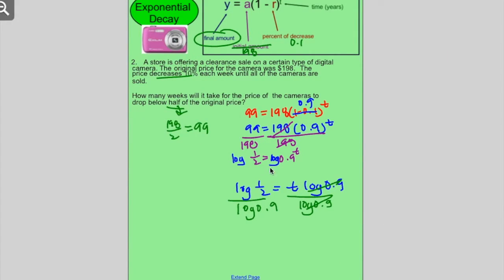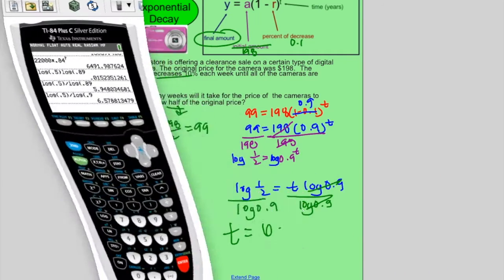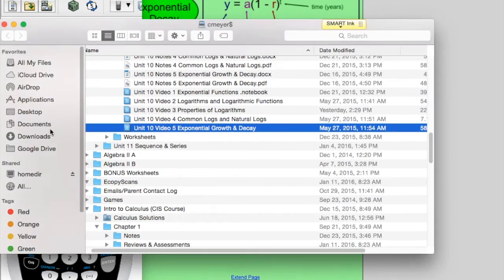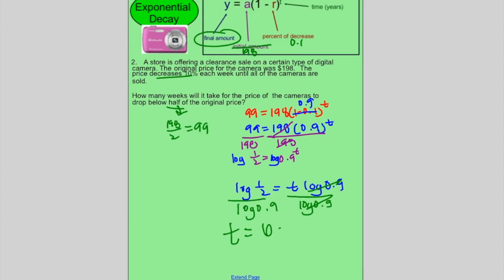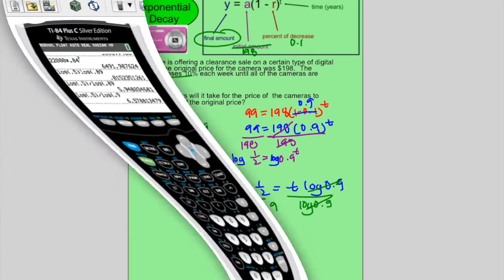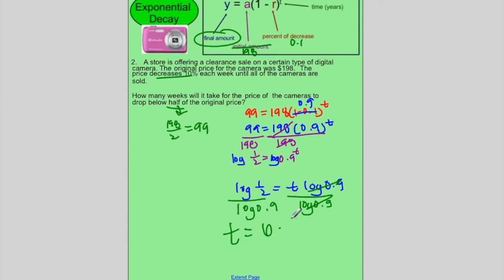6.579 weeks. So, how many weeks would it really take to drop below half? I would probably say 7 weeks. That is example 2.